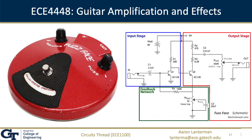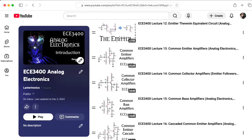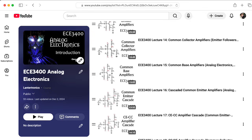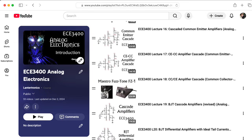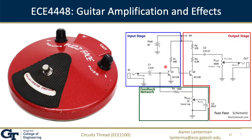This is an example of a fuzz face circuit of the sort that Jimi Hendrix might have used. This is basically a bog-standard transistor amplifier circuit with two transistors with feedback, which is the kind of circuit we look at in ECE3400 Analog Electronics — which is of course required for the circuits thread. Here it just happens to be pushed to extremes.